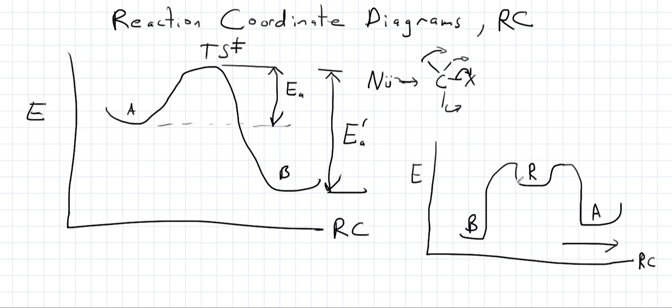We can see the equilibrium constant for these two things by looking at this energy difference. And of course, by looking at the sizes of these two different transition states. So we've got a transition state for the R to B reaction, and we could have a different transition state for the R to A reaction. So we can see which of these is going to have a bigger rate constant.